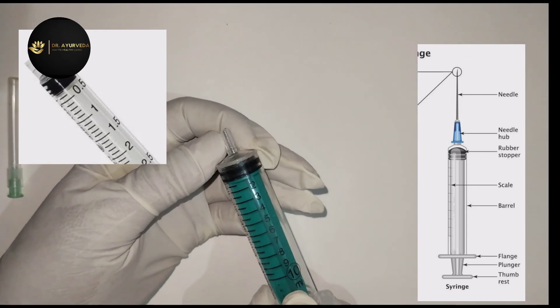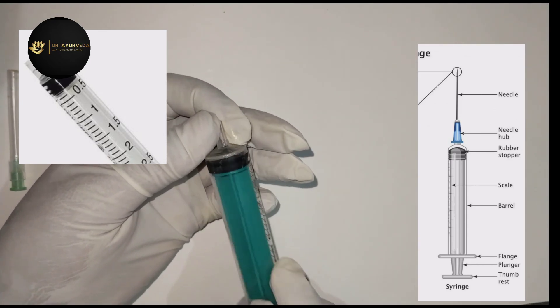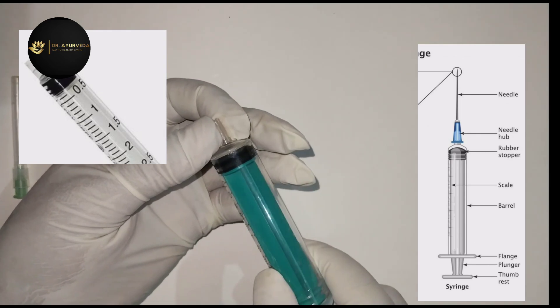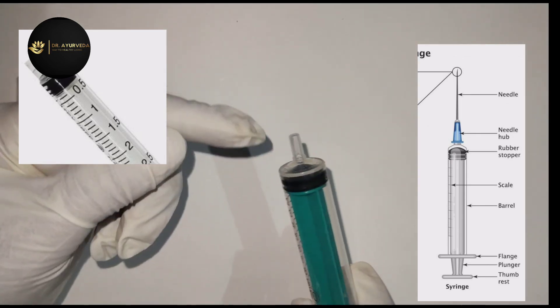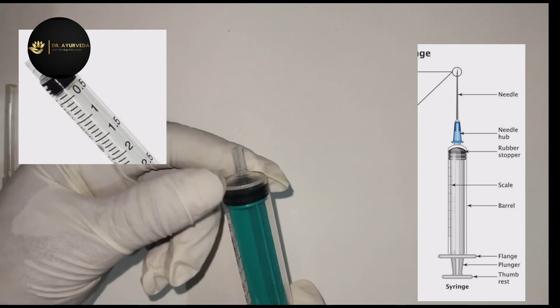When you put the lock in the back, you can set the lock. This area is called luer lock, you can see in the diagram.